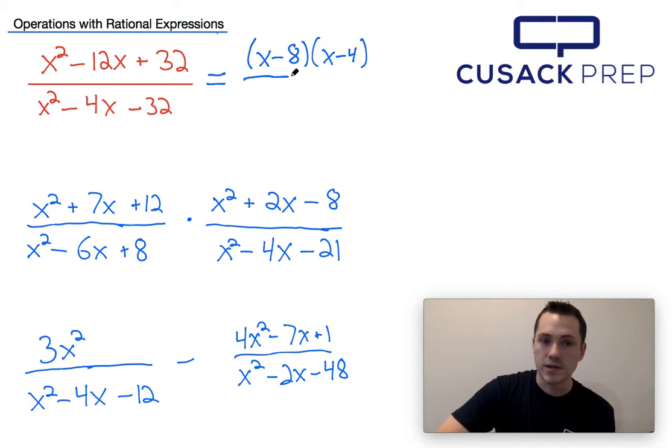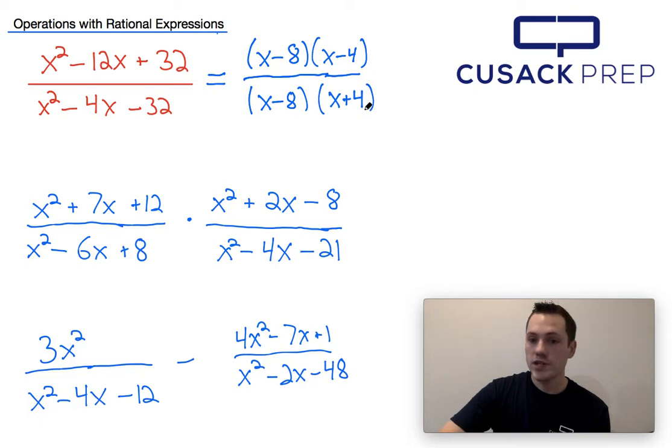For the denominator, I need two numbers that multiply to negative 32 but only add to negative 4. For that reason, I know that (x - 8)(x + 4) work really well. Now, once you have the same factor in both the numerator and denominator, and these factors are only being multiplied by each other, you can simply cross off the x minus 8. Our final answer for this one would just be (x - 4)/(x + 4). Pretty easy, right?